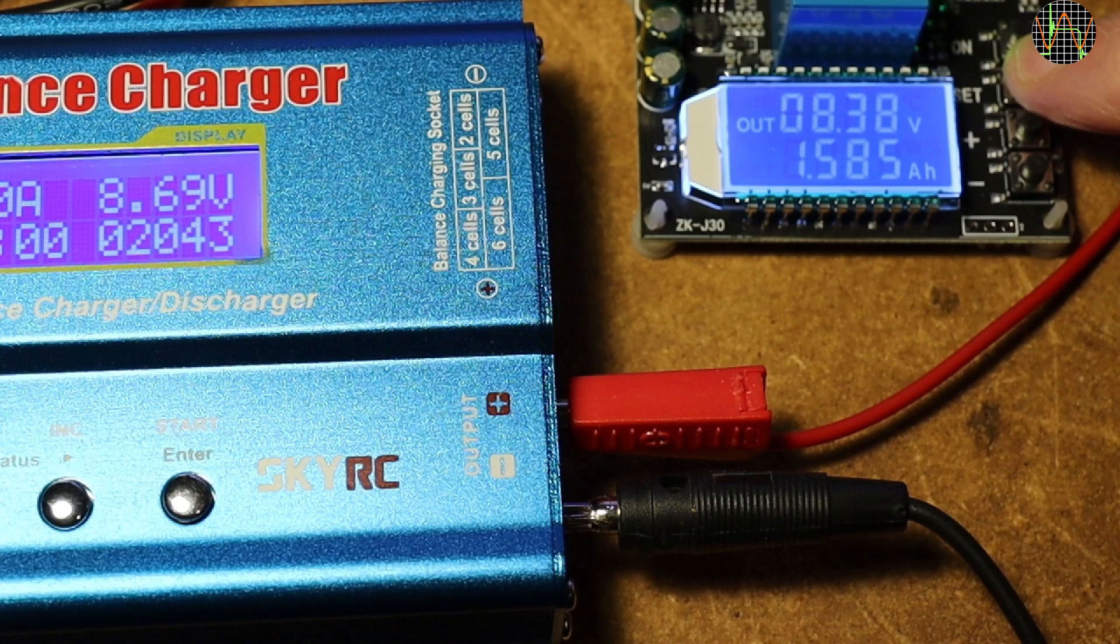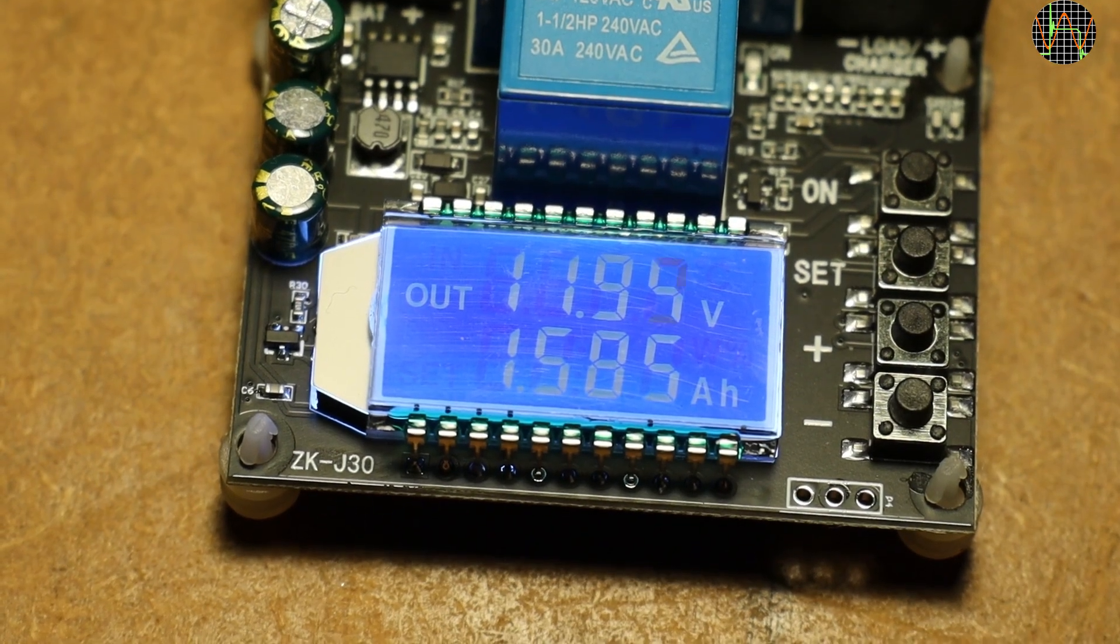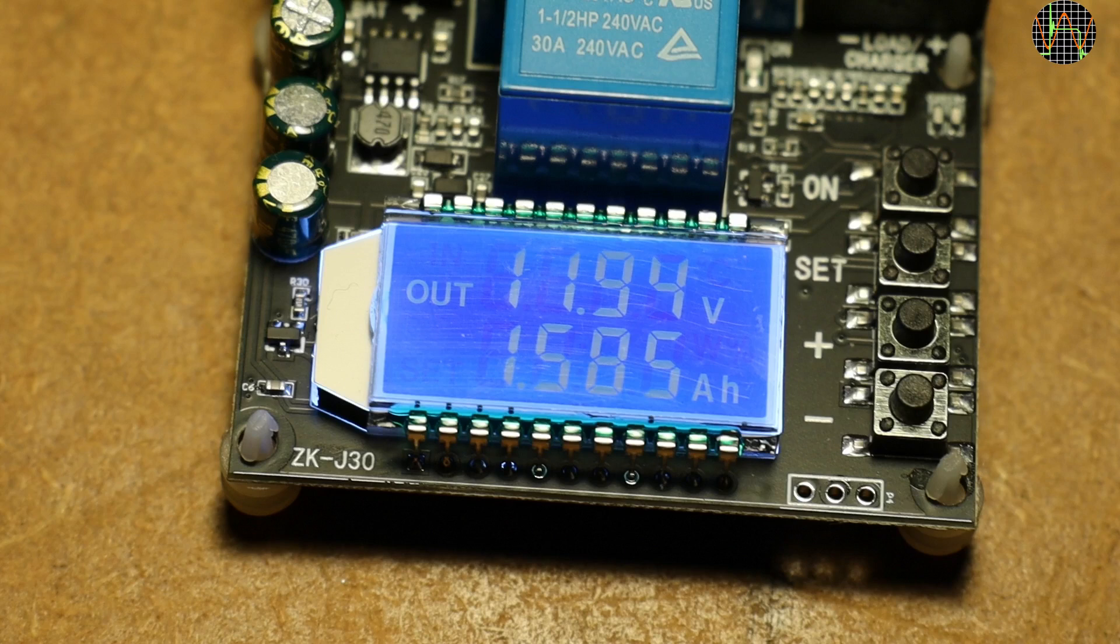But remember, even while the charger was actually charging normally, we had the wrong current readout on the module. All of which means the ZKJ30 recorded just 1585mAh of charge actually delivered, a significant shortfall from the 2043 the charger claims. More about that in a moment.